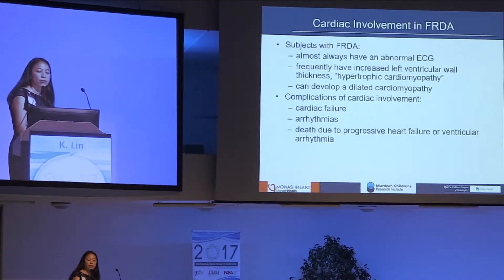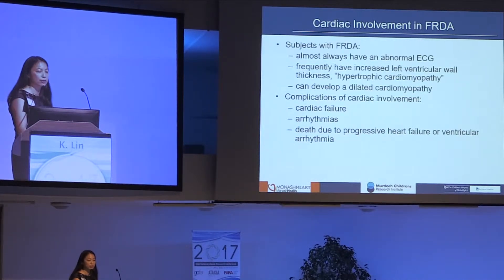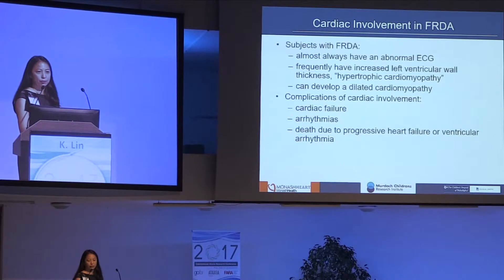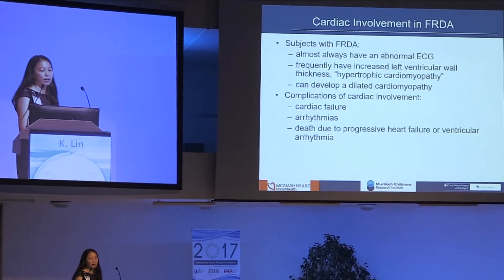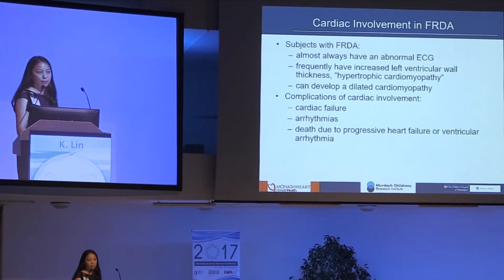Subjects with Friedreich's ataxia almost always have an abnormal EKG, and they will frequently have left ventricular wall thickness that is increased above normal. Therefore, we label them with a phenotype of hypertrophic cardiomyopathy, although this is different from the autosomal dominant — capital H — hypertrophic cardiomyopathy, which has been better described in terms of the underlying pathophysiology.